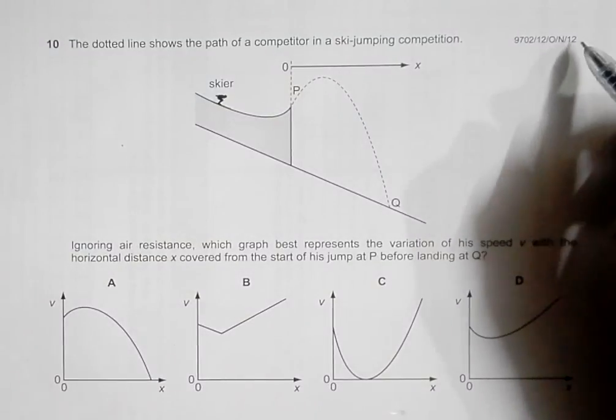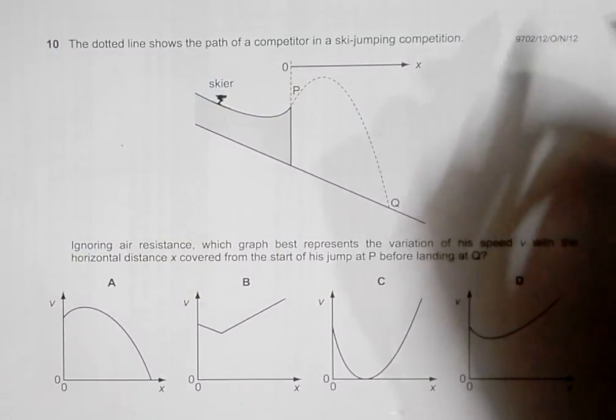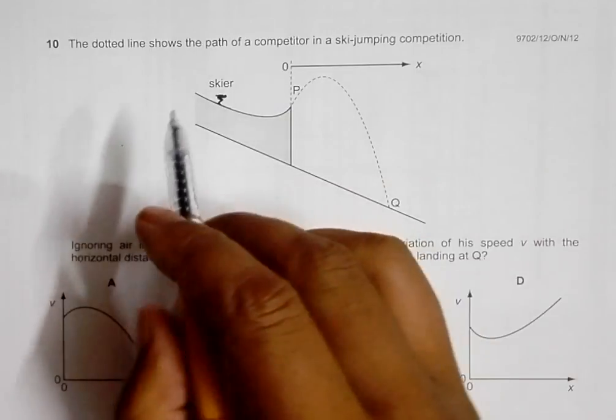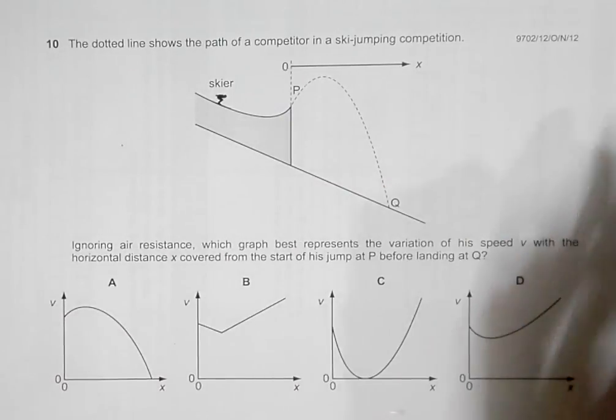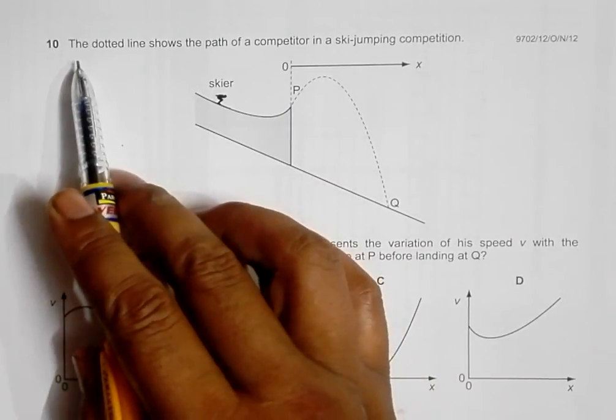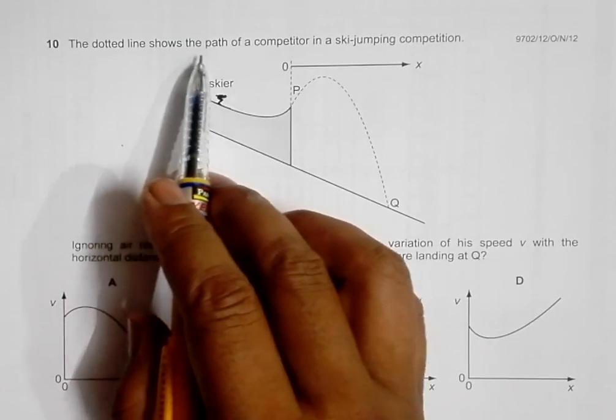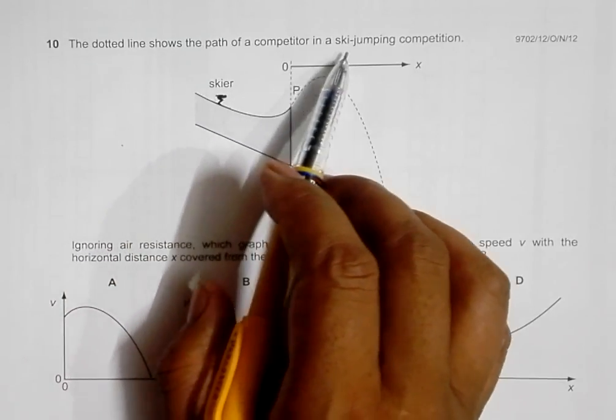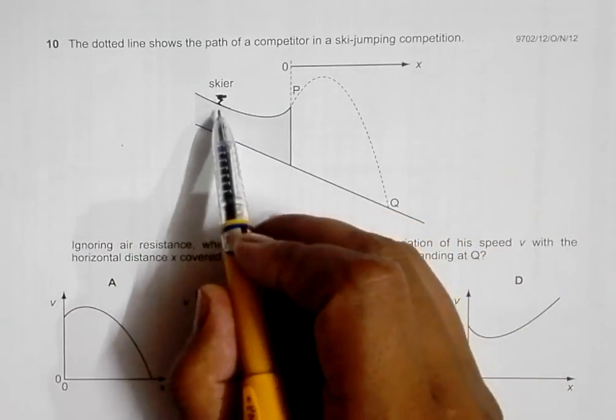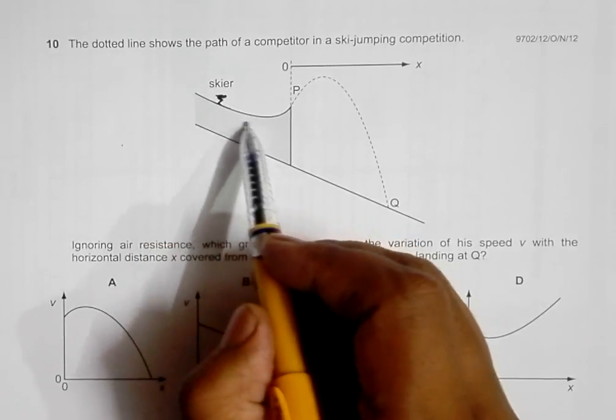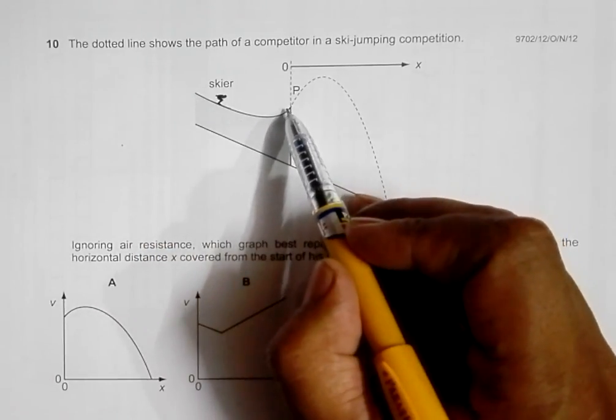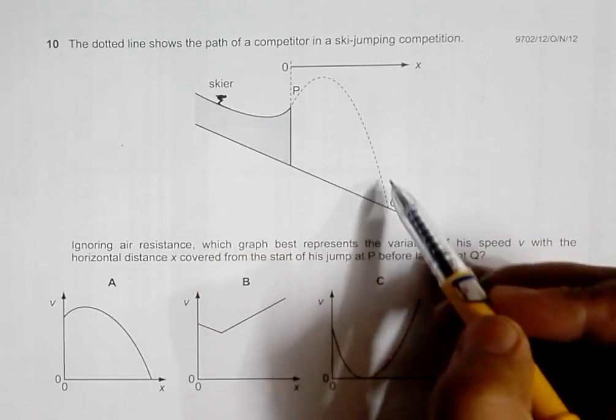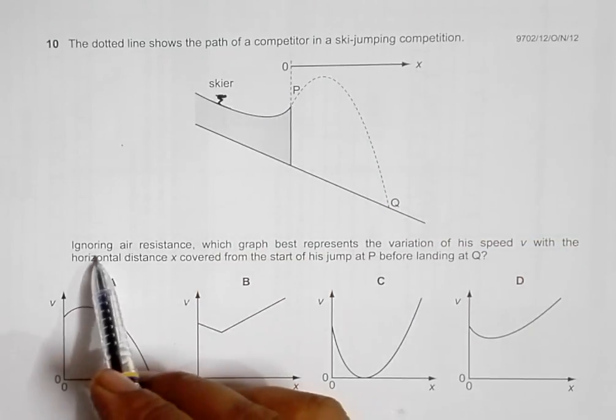This is the question of 2012 October November paper 12, question number 10. It says that the dotted line shows the path of a competitor in a ski jumping competition, so this is the skier. The slope is somewhat like this and from here he or she jumps off to land at Q.